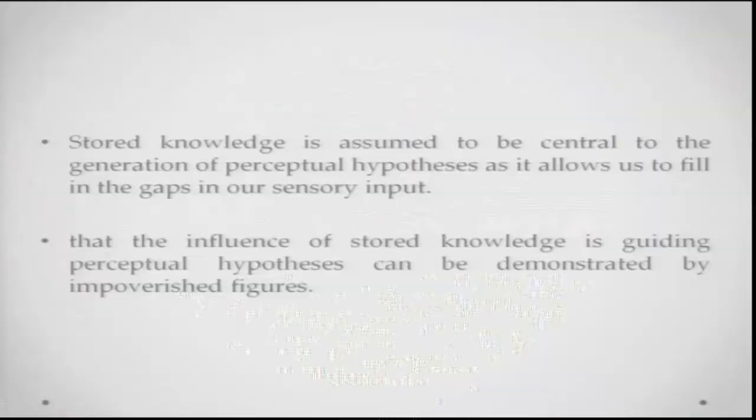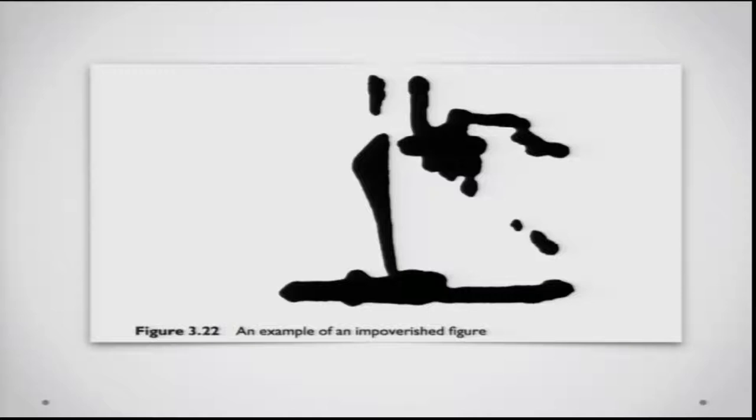The influence of stored knowledge in guiding the perceptual hypothesis can be demonstrated by impoverished figures — again the kind of figures we already saw. Can you make sense of what picture this is about? If you think about it — say if you are living in a city near a beach — you would automatically infer that this is basically a picture of a ship. You can see the chimney on the right side, water at the bottom, and a shape at the left which kind of resembles the front of a ship.